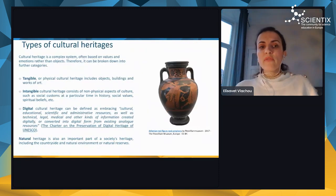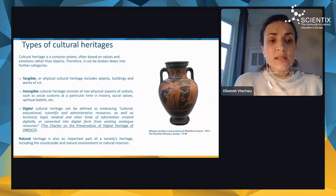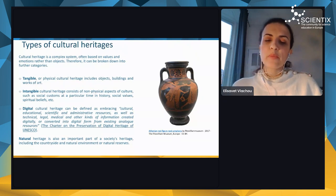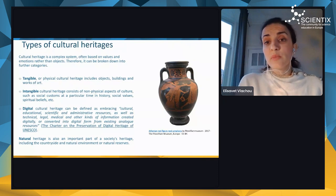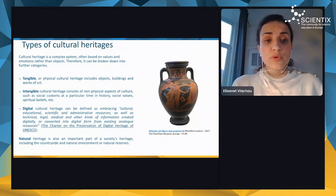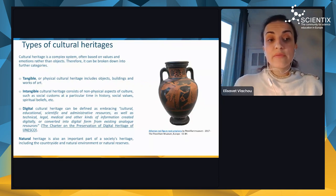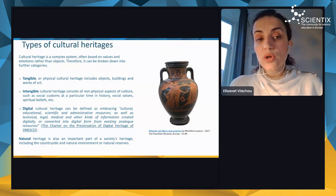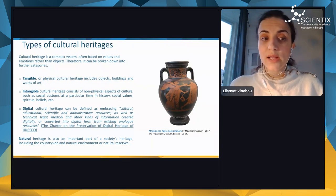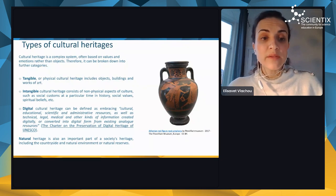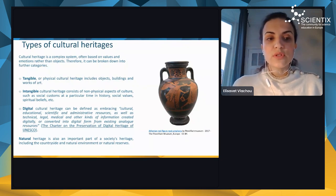We have different types of cultural heritage. Since cultural heritage is a complex system often based on values and emotions rather than objects, it can be broken down into different categories. We have tangible cultural heritage — also called physical cultural heritage — which includes objects, buildings, and works of art. We also have intangible cultural heritage, which consists of non-physical aspects of culture such as social customs, social values, spiritual beliefs, and so on.